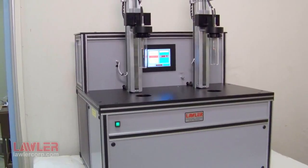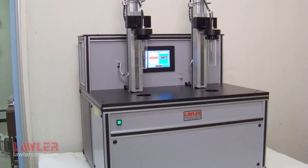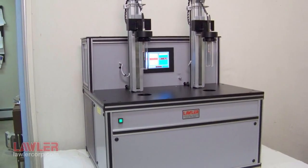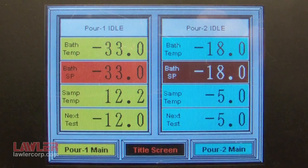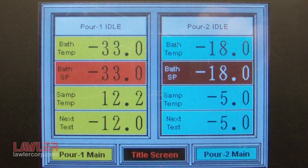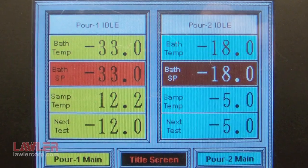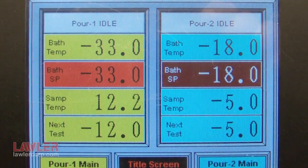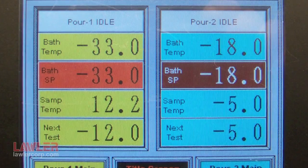Shown here is a two-position automatic pour point unit. Each test head has fully independent temperature control, robotic tilting arms, metal test jackets, and operator control. Several combinations of test method heads are available in two position units.